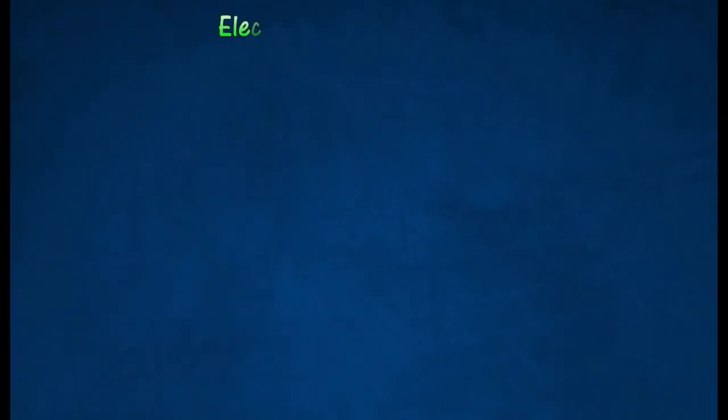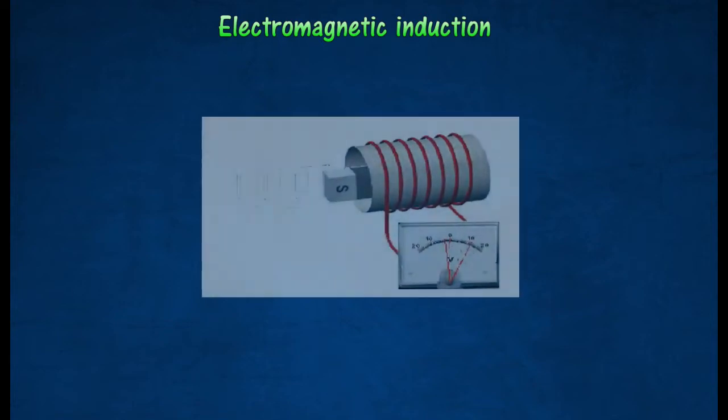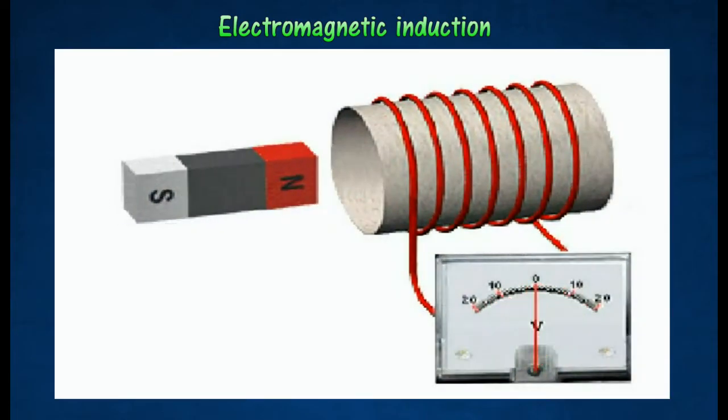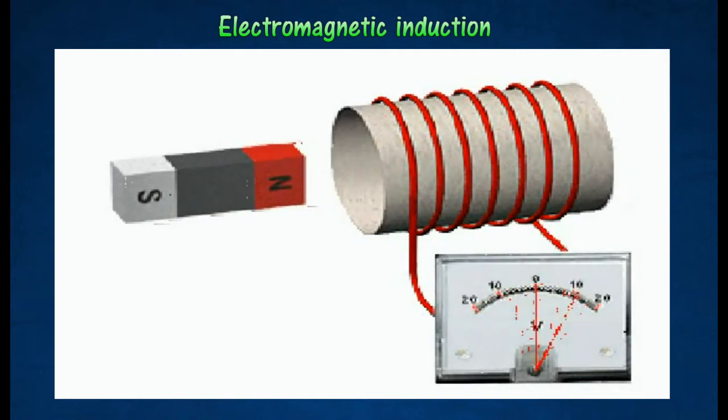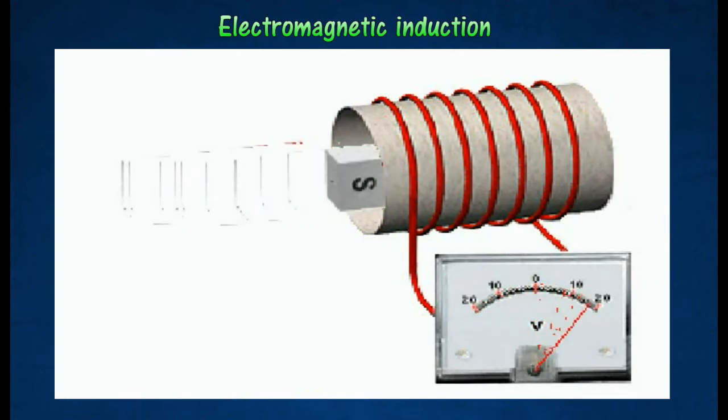Electromagnetic induction. Electromagnetic induction is a process where a conductor placed in a changing magnetic field causes the production of a voltage across the conductor. This process of electromagnetic induction, in turn, causes an electrical current.